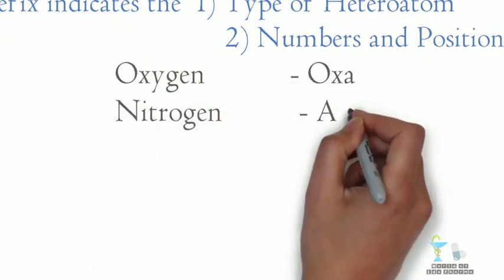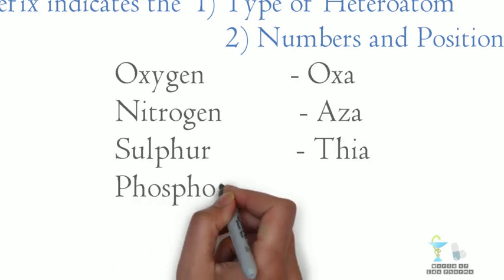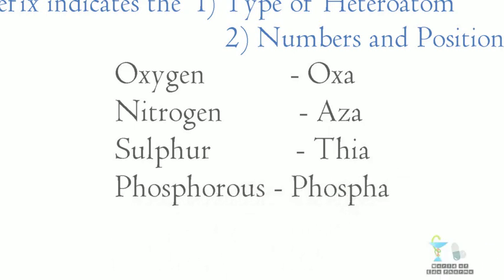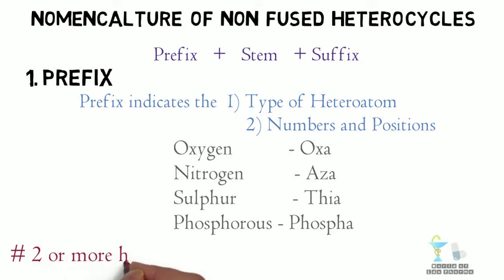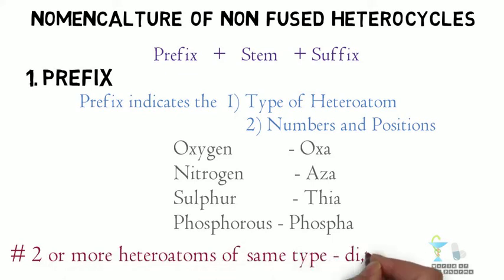For oxygen, the prefix is oxa. For nitrogen, the prefix is aza. For sulfur, the prefix is thia. For phosphorus, the prefix is phospha. When two or more heteroatoms of the same type are present, the prefix di, tri, or tetra are used.